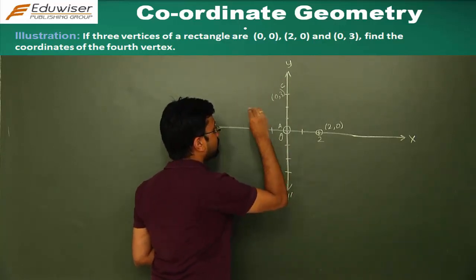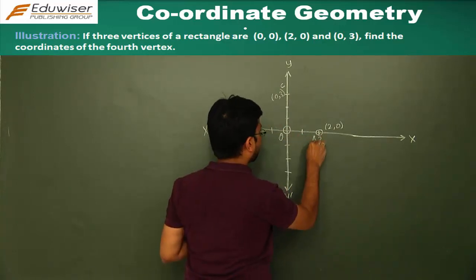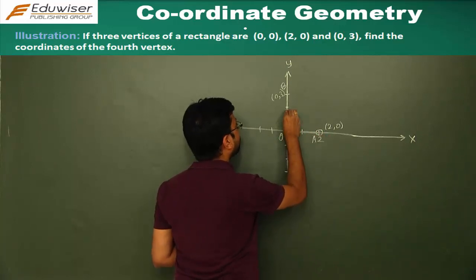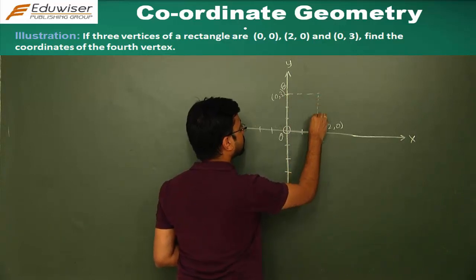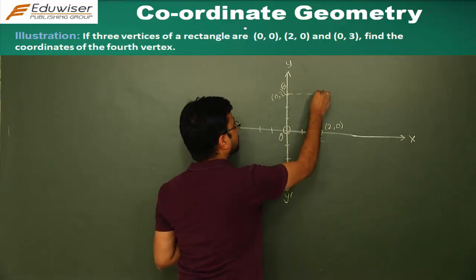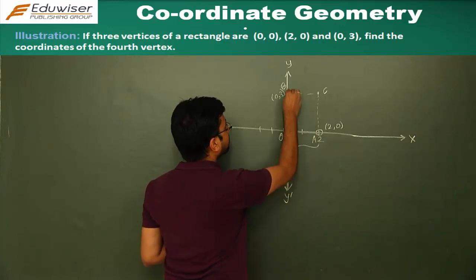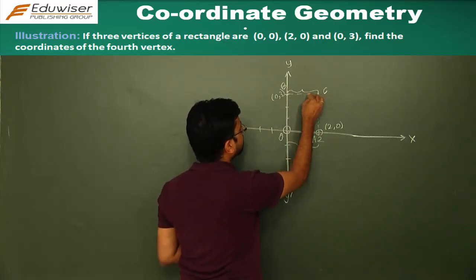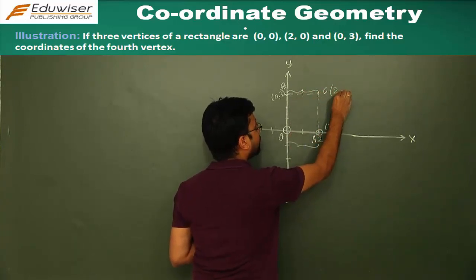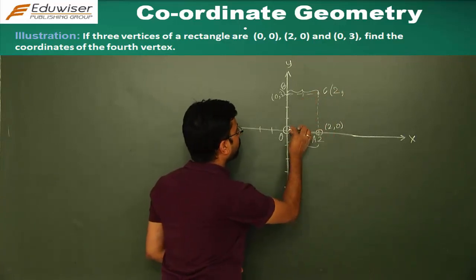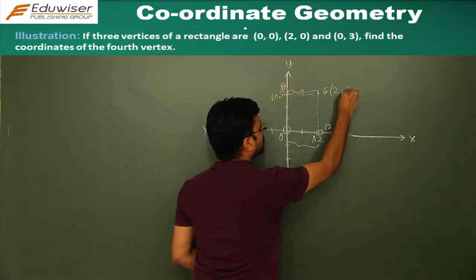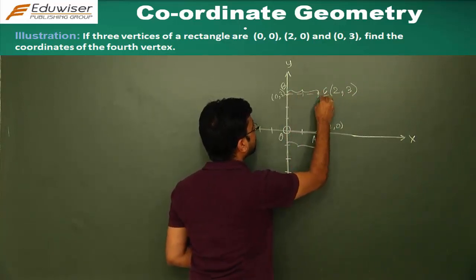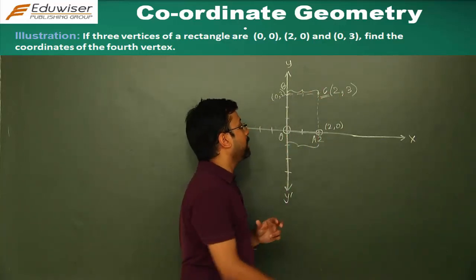So calling these points O, A, and B, we have to find the fourth vertex of the rectangle. The fourth point will have to complete the rectangle. Since opposite sides of a rectangle are equal and this distance is 2 units, you move 2 units along x — so the x-coordinate is 2. For y, you move 1, 2, and 3 units, so y is 3. The fourth vertex coordinate is (2, 3).